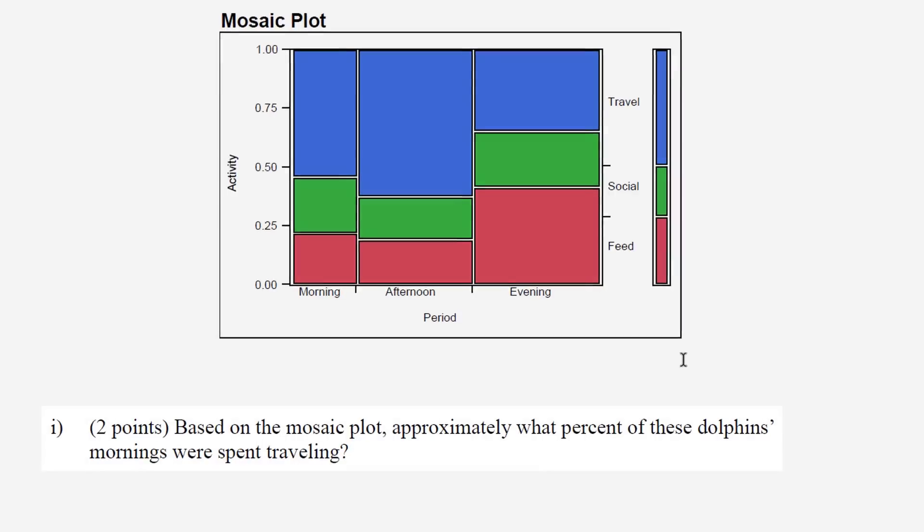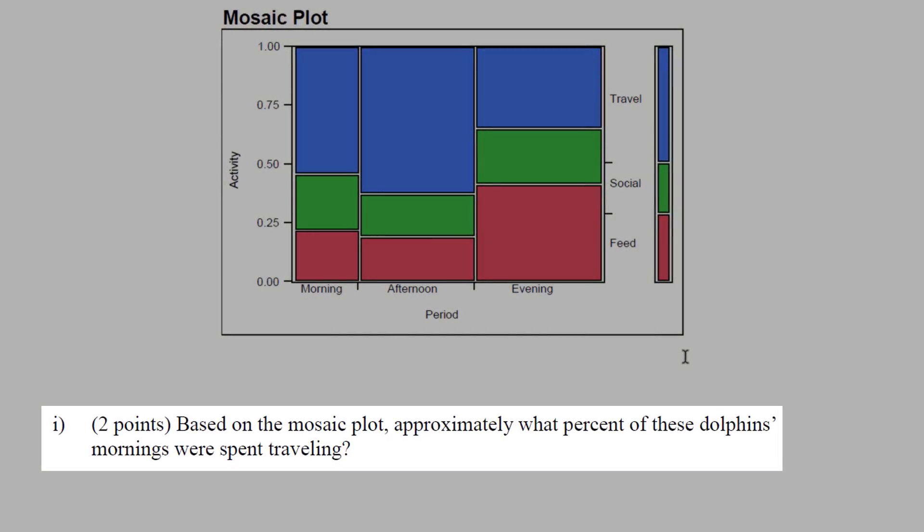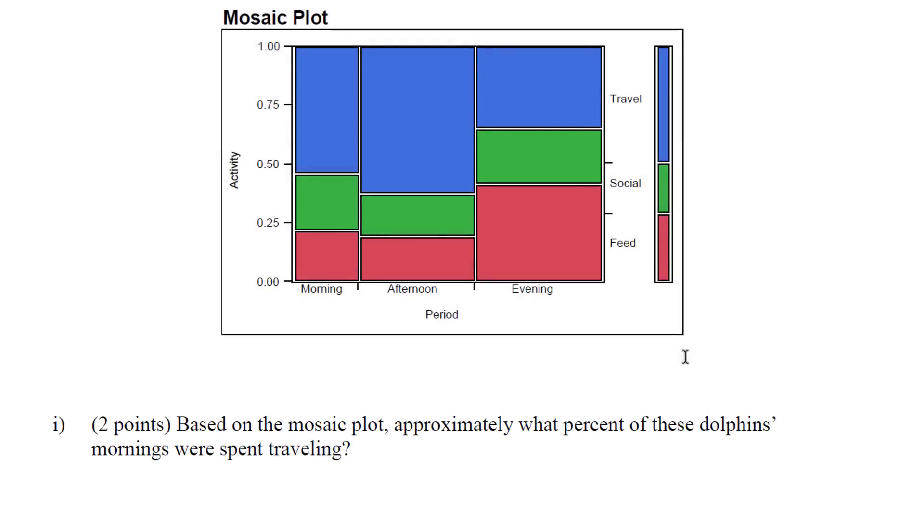Based on the mosaic plot, approximately what percent of these dolphins' mornings were spent traveling? This would be given that it was the morning, what percent of the time were they traveling. And this is the blue area right here. This blue area we can see is more than 50 percent, so just a little bit more than 50 percent.